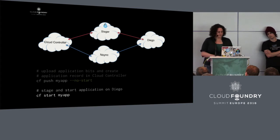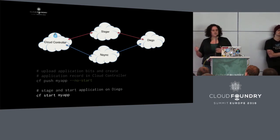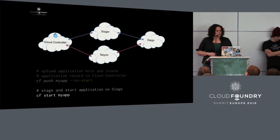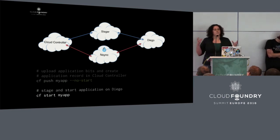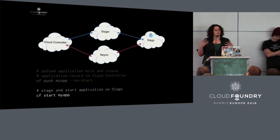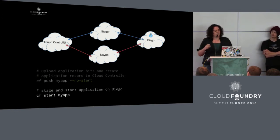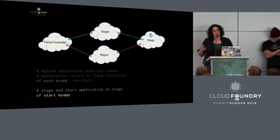The result is a droplet that gets uploaded to the cloud controller database. Then the cloud controller talks to another translation layer called NSYNC — the communication layer between the cloud controller and Diego for starting apps. NSYNC creates a long-running process (LRP) description and Diego places it on whatever number of containers across various cells to run the app. Once running, Diego makes sure it stays running, restarting it on another cell if it crashes.